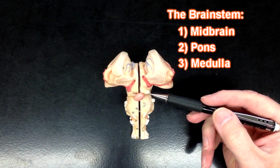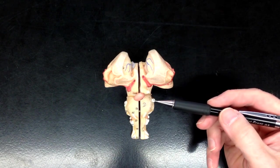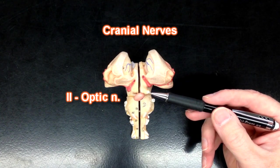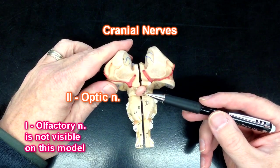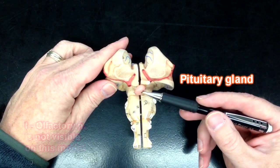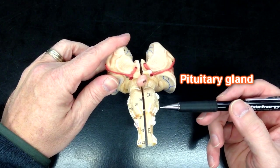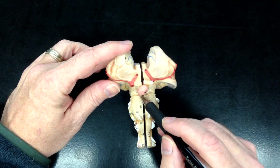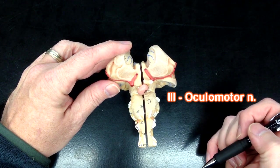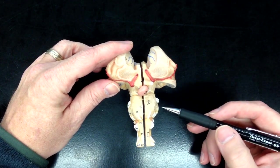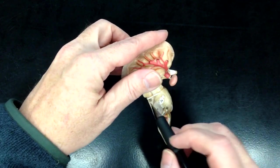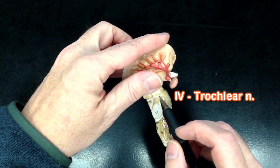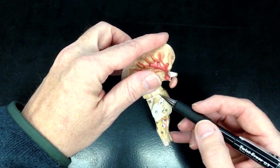This model is really good for visualizing many of the cranial nerves, like cranial nerve number two, which is the optic nerve. This structure right here is the pituitary gland. If I were to move the model like this, we would be able to see the oculomotor nerve in here. The trochlear nerve — cranial nerve number four — we would have to move the model a little bit and see it coming around like this.